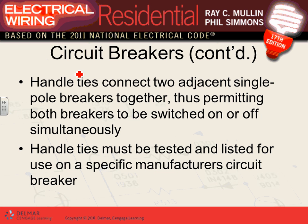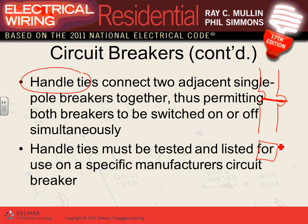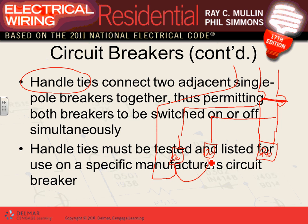The code allows you to use an approved handle tie to connect two single-pole circuit breakers together. You can use it to feed a 240-volt load, or to tie two 120-volt loads on a multi-wire circuit with a shared neutral. The handle must be tested and listed for that specific manufacturer's circuit breakers.